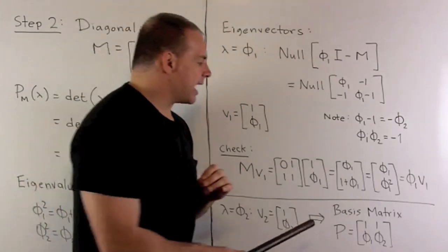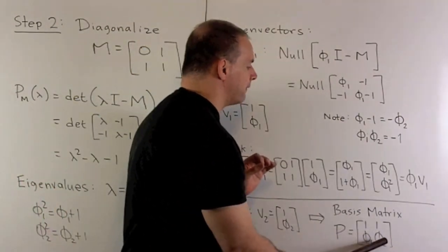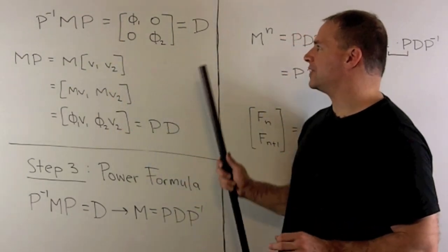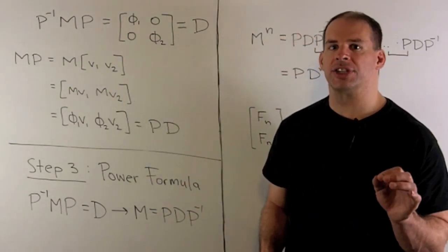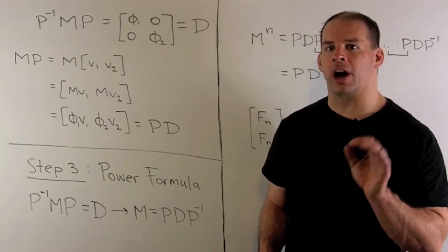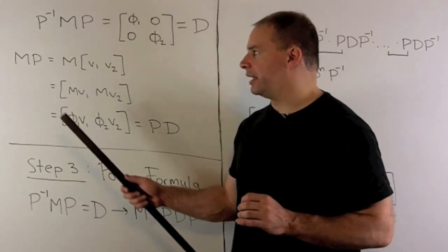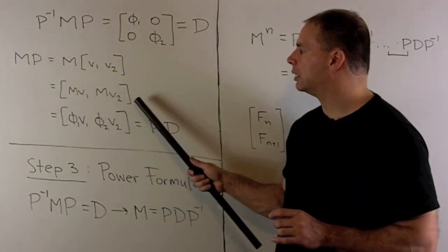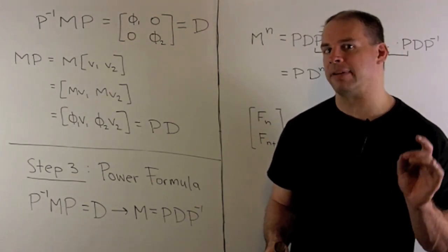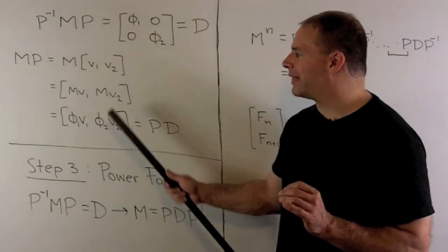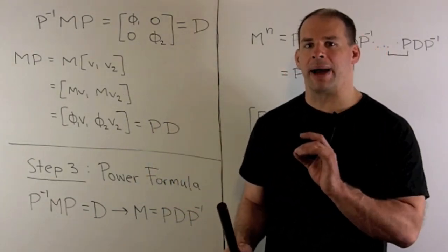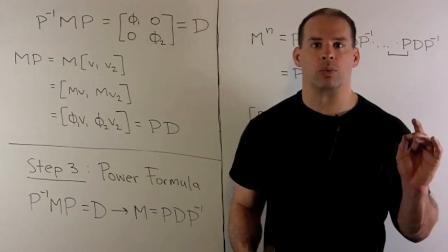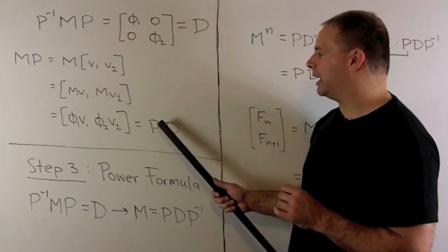We set up our basis matrix P as [v1, v2], which is the matrix with columns [1, 1; phi1, phi2]. The formula is P inverse M P equals our diagonal matrix, where the diagonal entries are the eigenvalues phi1 and phi2 in the same order as the eigenvectors. To see this: M times P multiplies M by each column vector; since these are eigenvectors, we just multiply by the corresponding eigenvalue. Multiplying columns by scalars corresponds to multiplying by a diagonal matrix on the right, and then we push P to the other side as P inverse.